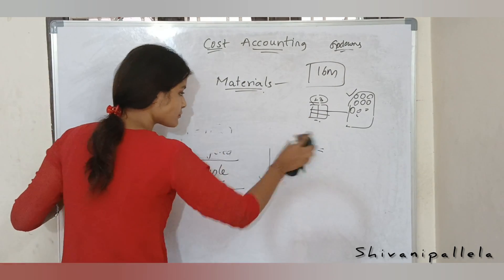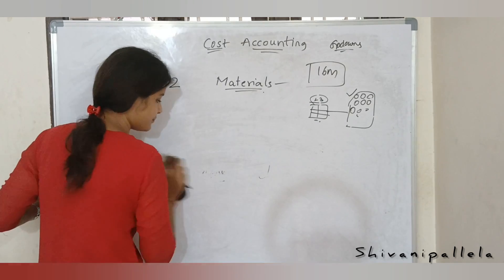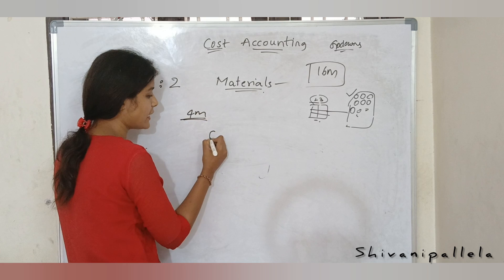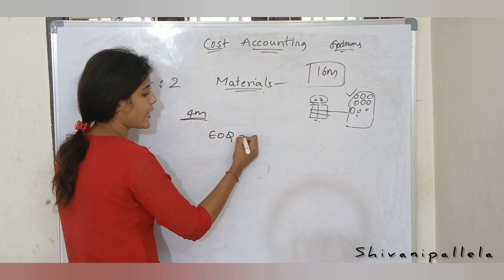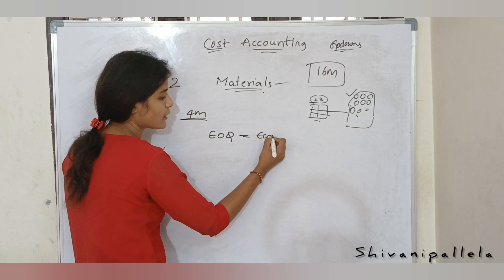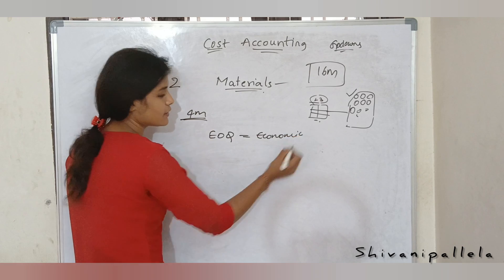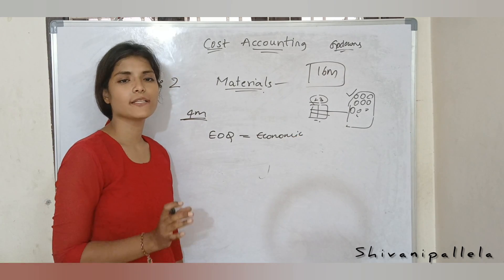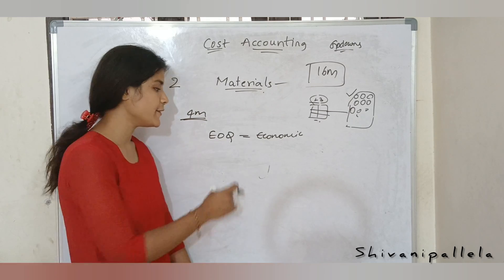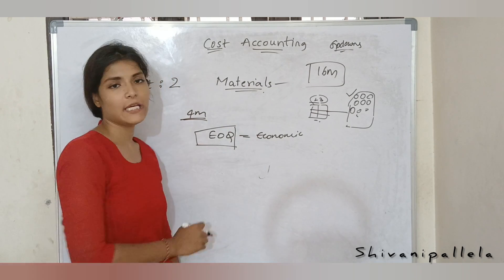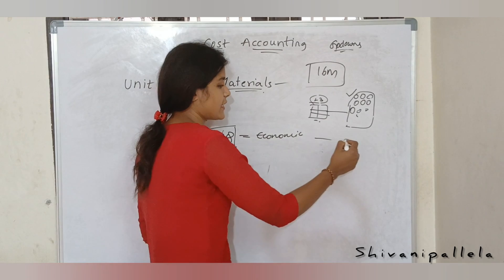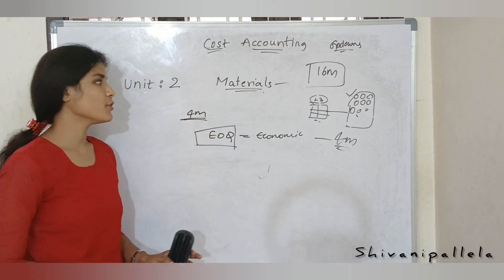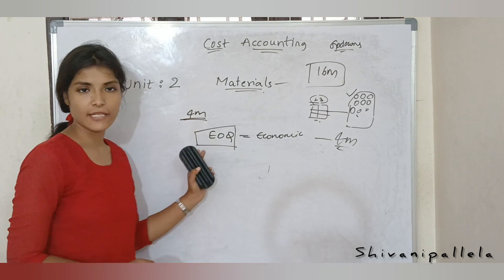For the remaining 4 marks in problematic, we can expect an EOQ question — that is called Economic Order Quantity. It is a simple formula; you just convert your question data into the formula. Compulsory, you can expect one EOQ question as a problematic from unit number 2. Changes are there, but most likely it will be EOQ only.